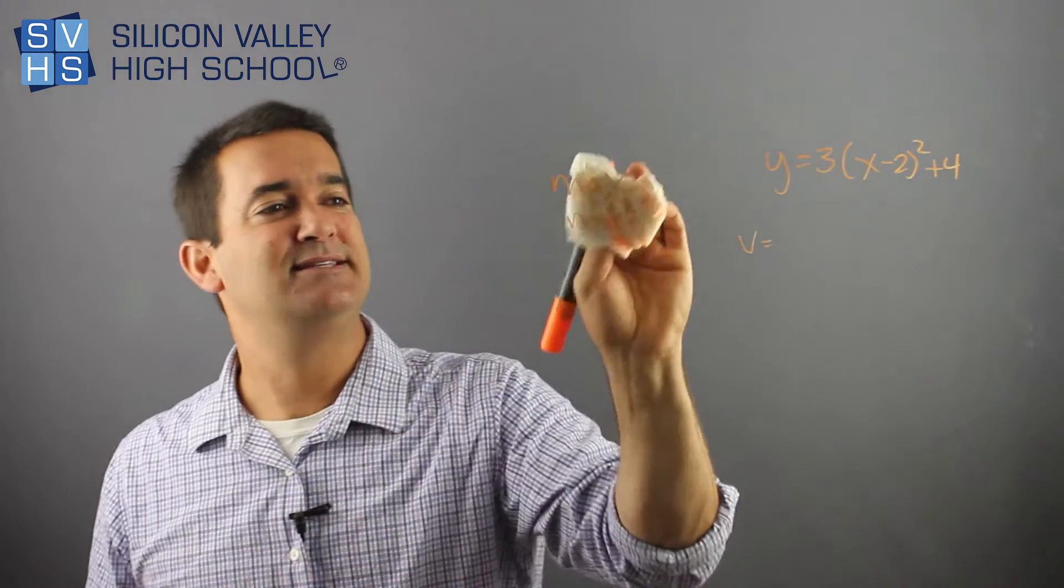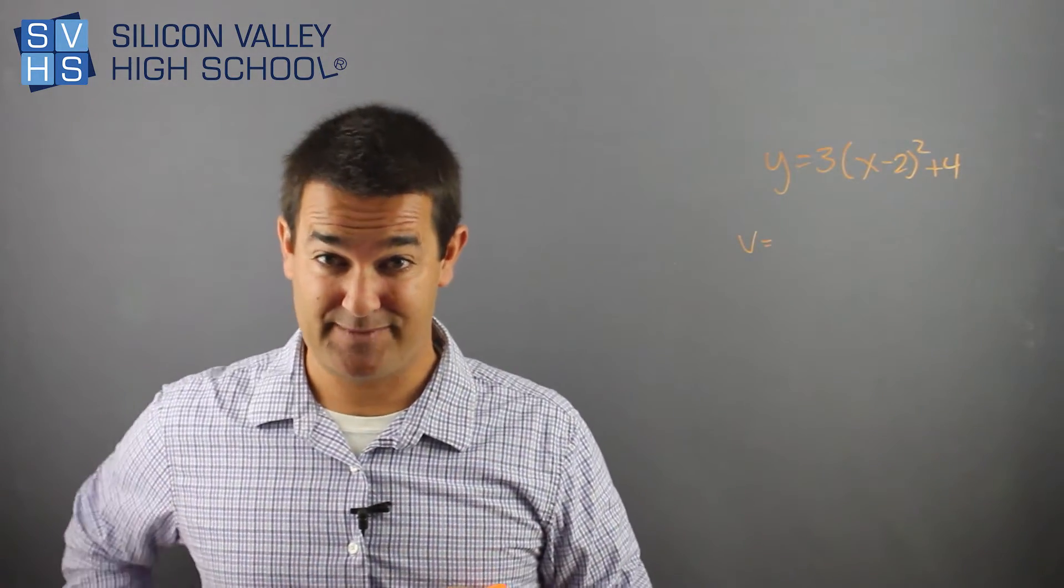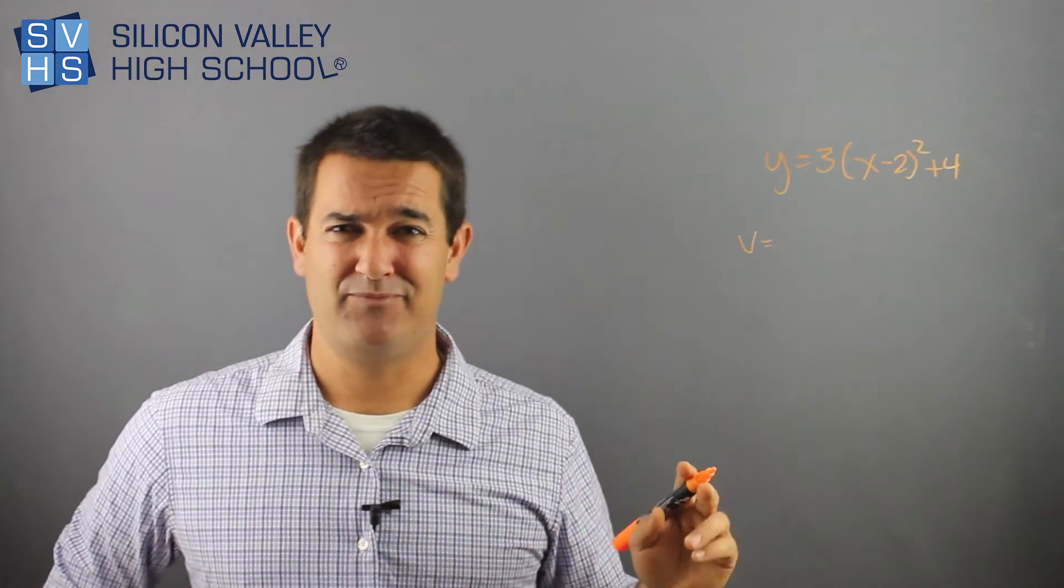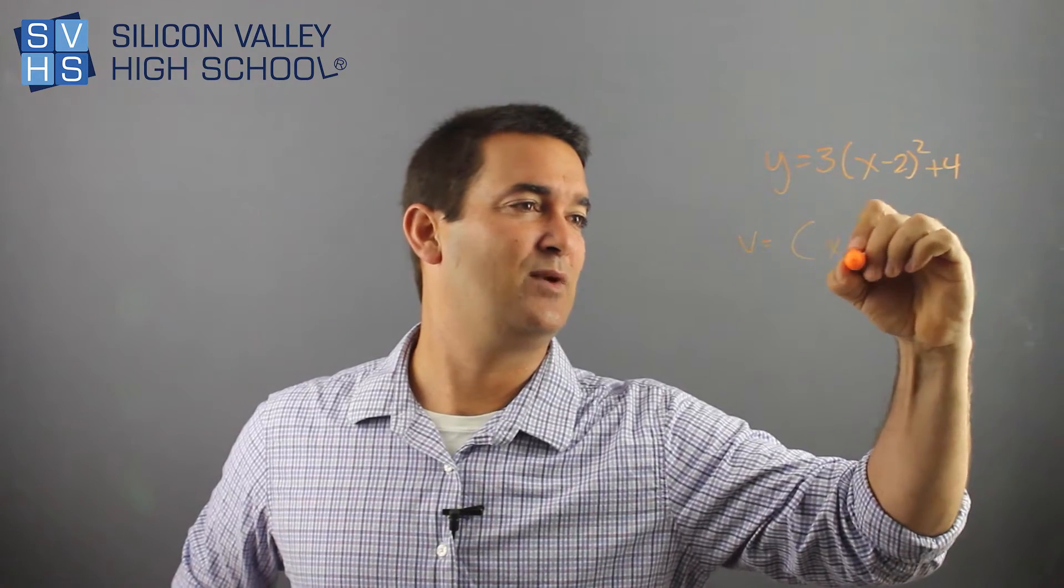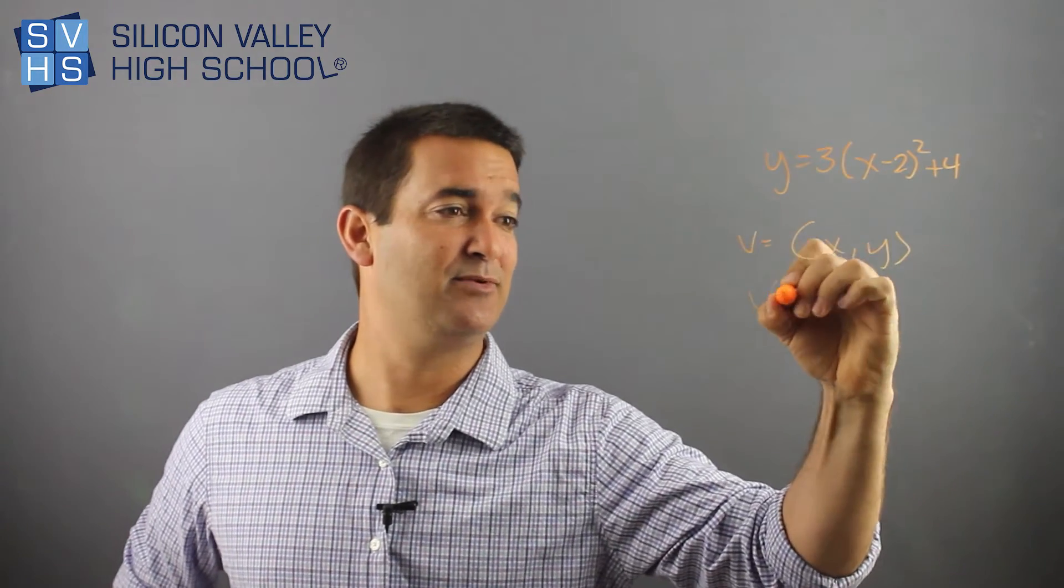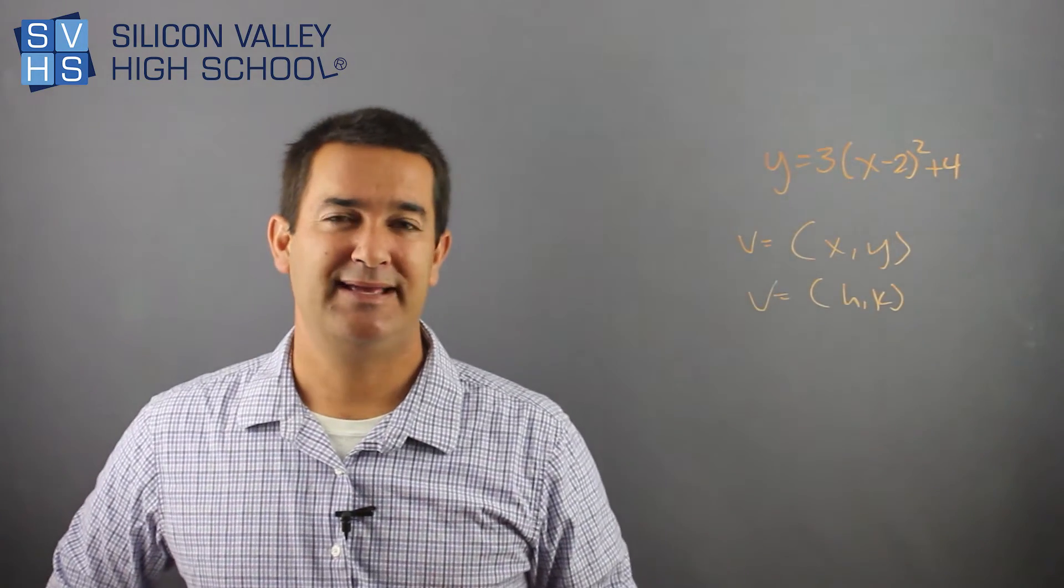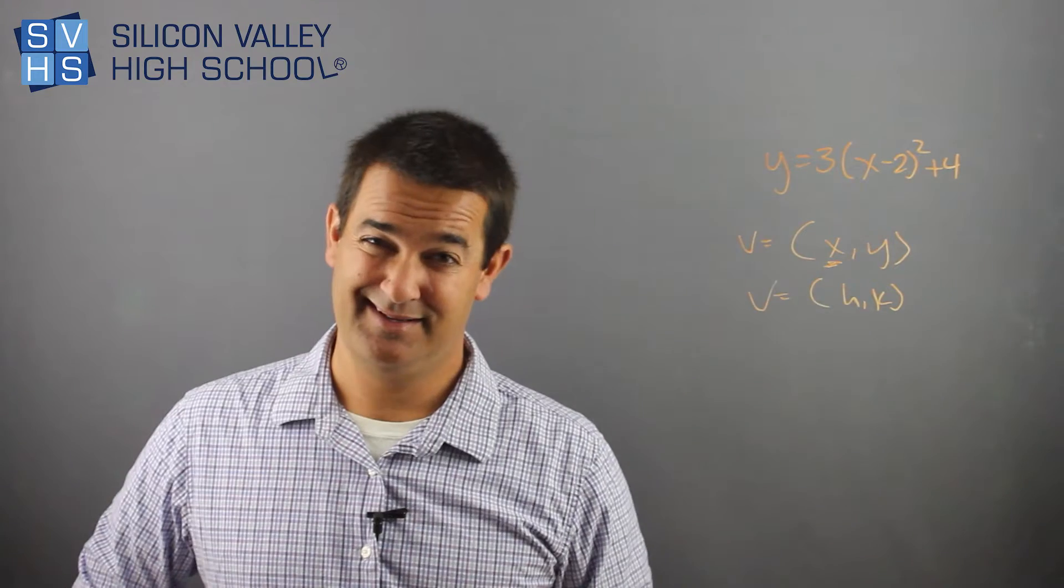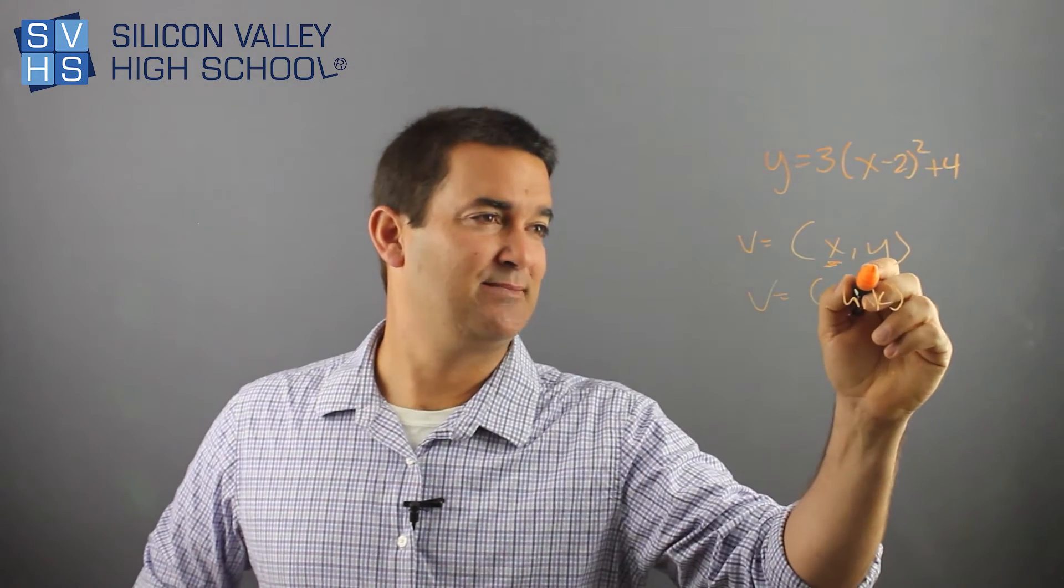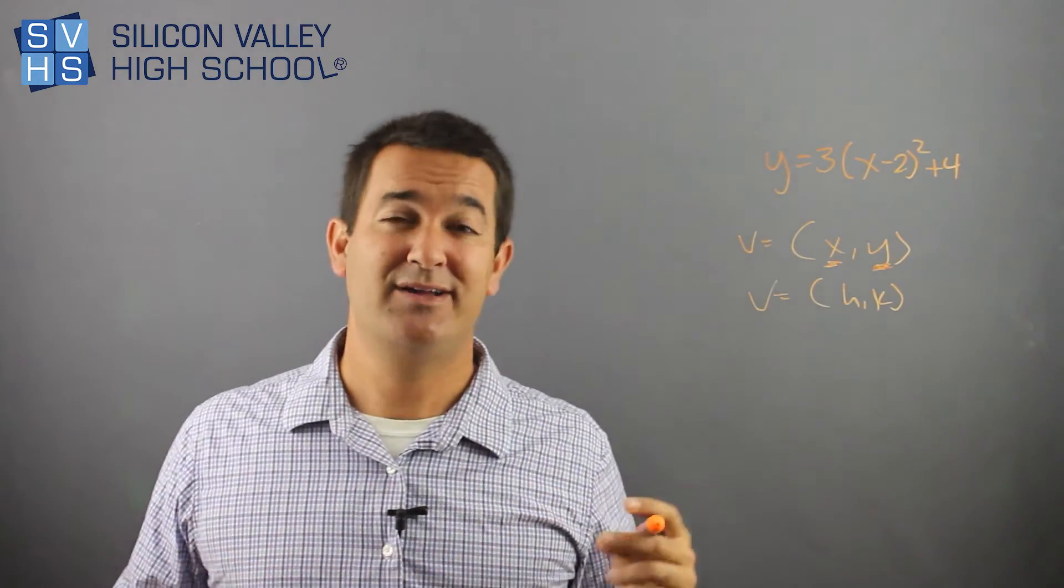And the problem is, what's confusing for people, at least it was confusing for me when I was a youngster like you in my prime running the streets, is that you have this vertex x, y. It's a point. Some people also call it h, k. Now, is the maximum or minimum value this dude, or is the maximum or minimum value this dude? And how do I know? Is it the x value or the y value? Let me just end your confusion and tell you it's the y value every time.